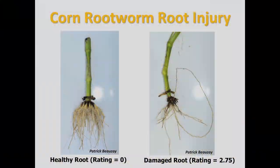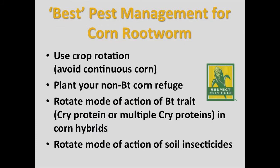If you're observing root injury that exceeds the economic threshold of 0.25, consider diversifying your corn rootworm management to delay resistance and improve pest management. Examples include crop rotation, planting your refuge, rotating your modes of action with your BT traits, and rotation of any soil-applied insecticides.